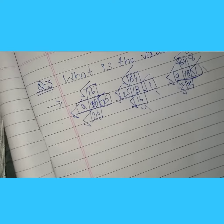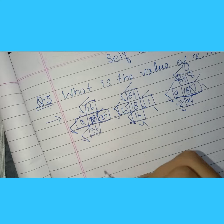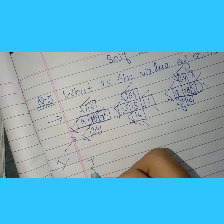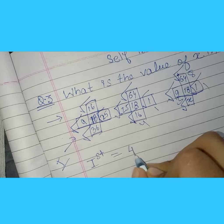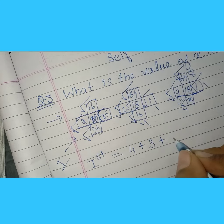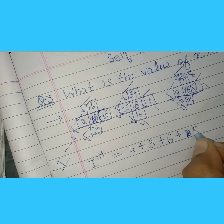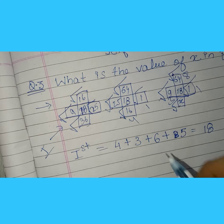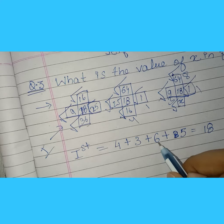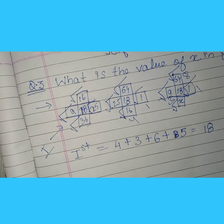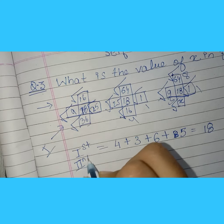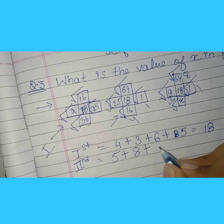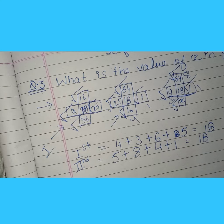Now we will add — we will do the sum of the square roots of all columns. We name the first column: 4 plus 3 plus 6 plus 5 equals 18. Let's check: 5 plus 3 is 8, and 6 plus 4 is 10; 10 plus 8 equals 18. For the second column: 5 plus 8 plus 4 plus 1 equals 18.